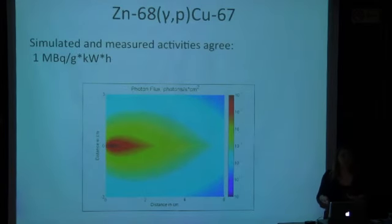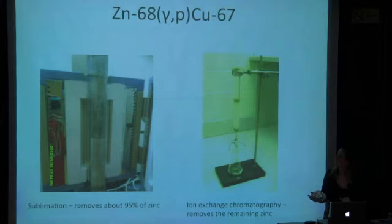One more example is copper-67. So now you're knocking out a proton. In general, the cross-section is a little bit lower. So your final yield is lower, 1 MBq per gram per kilowatt per hour. However, the beauty of gamma-P reactions is that chemically your final product and your target are different. So now you can just chemically separate them. We, however, use a two-step separation. The first one is just sublimation. We use the fact that zinc and copper have very different melting temperatures. So we basically evaporate zinc and leave the copper behind. We evaporate most of the zinc and leave the copper behind. And then for final separation, we just use a chromatography column and we send it through the column so that zinc sticks to the resin and copper goes through. And finally you have your radioactive copper in this vial as an eluate.